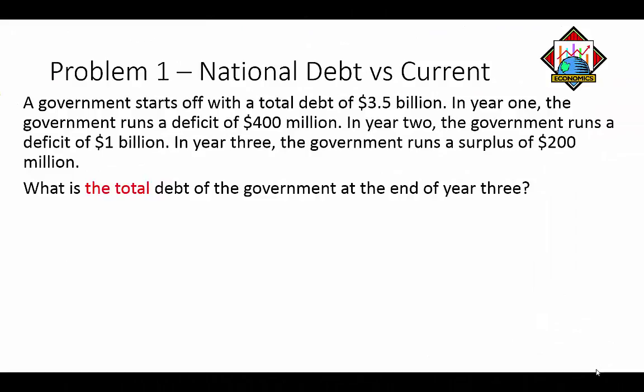A government starts off with a total debt of 3.5 billion dollars. In year one the government runs a deficit of 400 million dollars, so we're going to add to our 3.5 billion. We're calculating the debt as a positive number — if we're going out of debt we'll make that a negative number. So we've got our total debt of 3.5 billion; year one we're going to add to that debt, since the deficit is going to add to the debt.